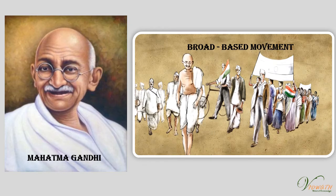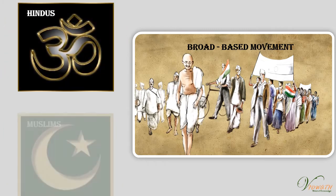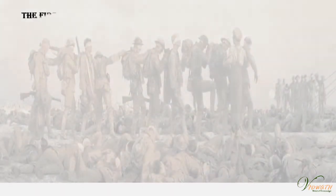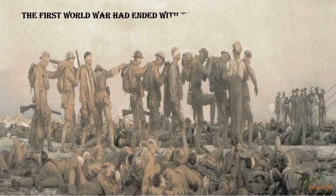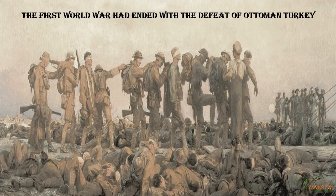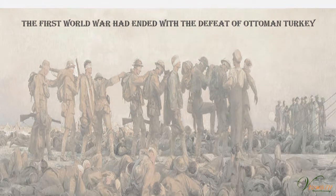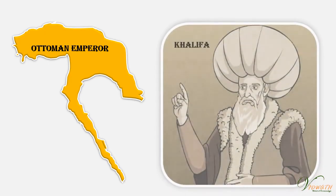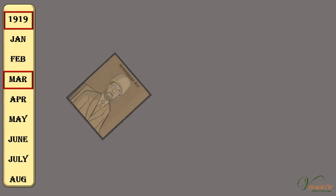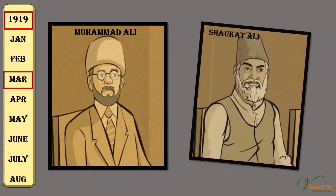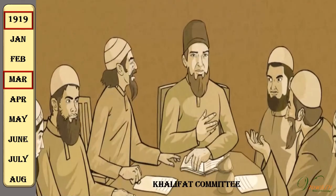He was certain that no such movement could be organised without bringing the Hindus and Muslims closer together. The First World War had ended with the defeat of Ottoman Turkey, and there were rumours that a harsh peace treaty was going to be imposed on the Ottoman Emperor — the spiritual head of the Islamic world, the Khalifa. In March 1919, the Ali brothers, Muhammad Ali and Shaukat Ali, formed a Khilafat Committee in Bombay to garner support for the Turkish Khilafat.